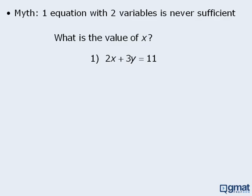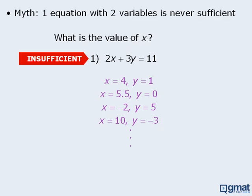Here's an example where the rule does work. In this question, we want to find the value of x. Statement 1 tells us that 2x plus 3y equals 11. Here we have one equation with two variables, and in this particular case the statement is not sufficient, because there is an infinite number of solutions to the equation. Since this equation has an infinite number of solutions, there is no way to determine the value of x with any certainty. So in this case, one equation with two variables did not provide sufficient information to answer the target question.